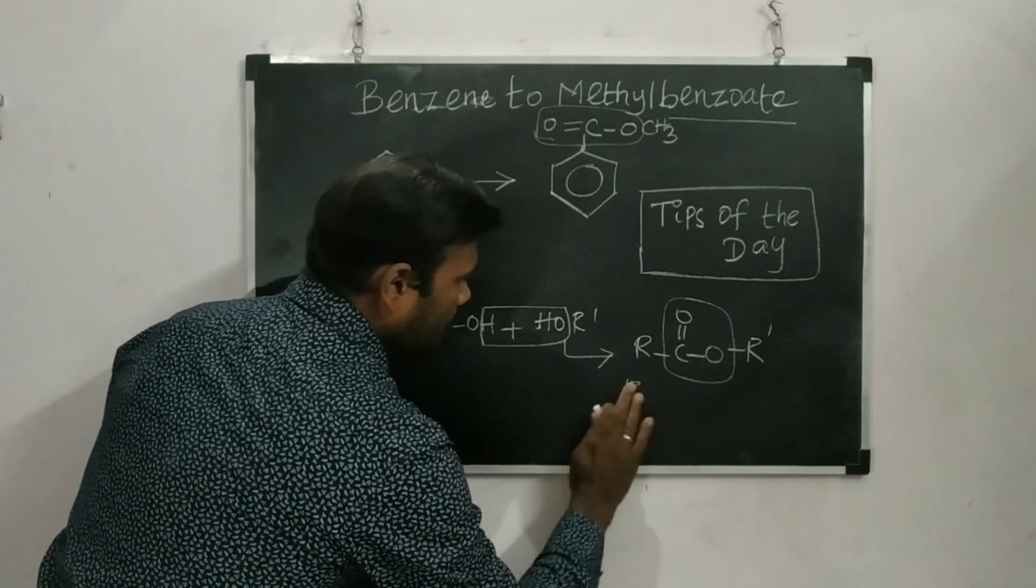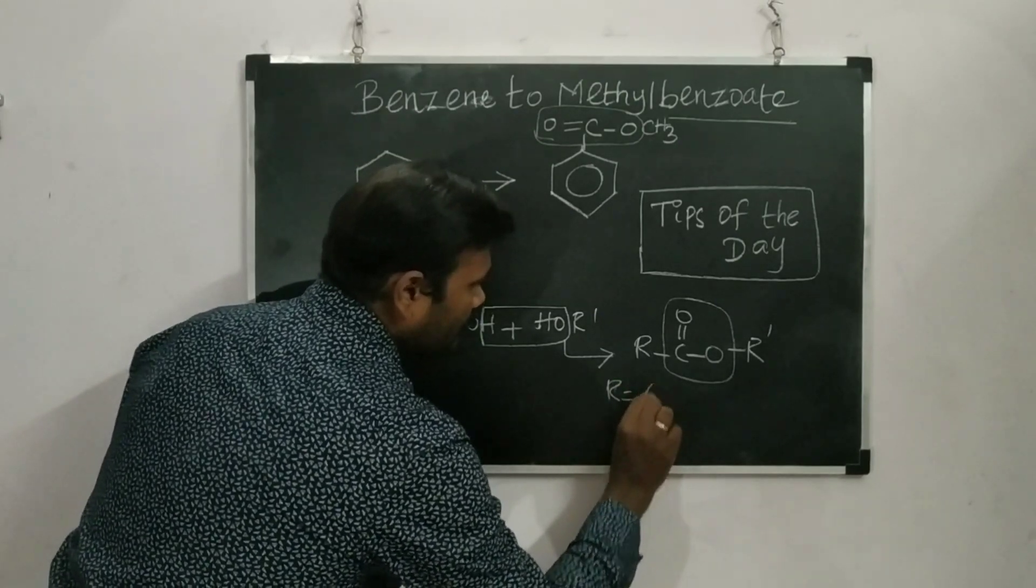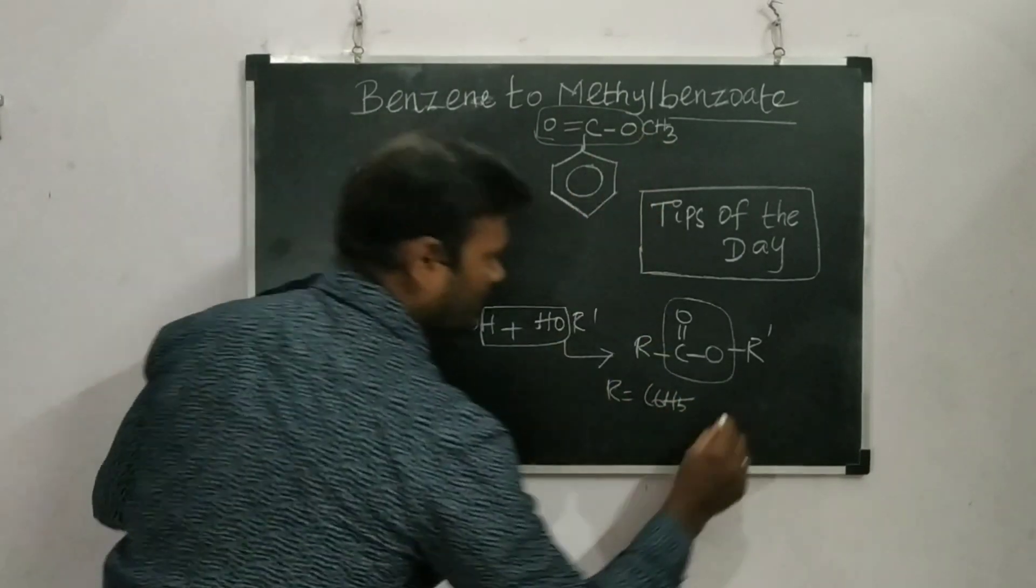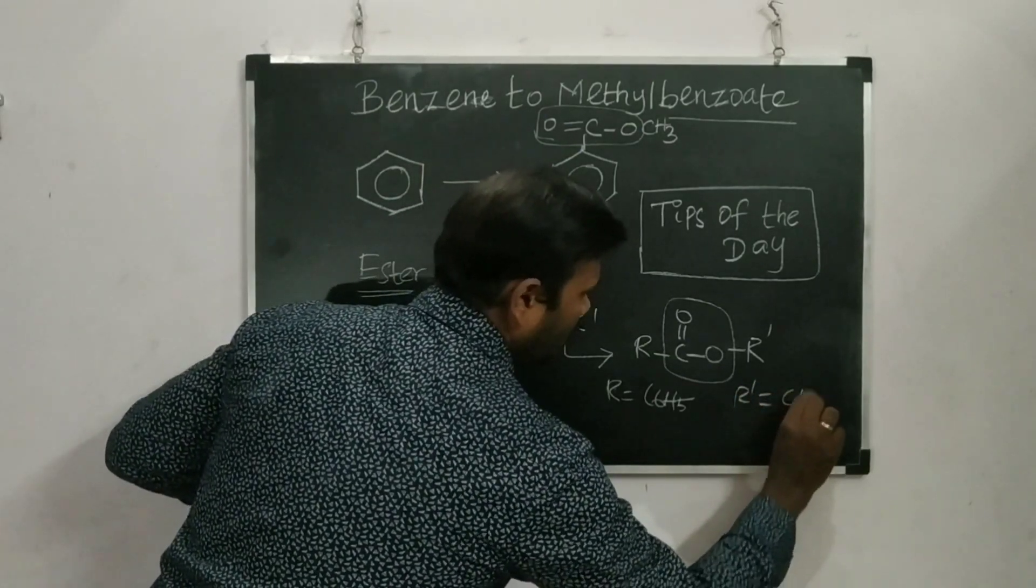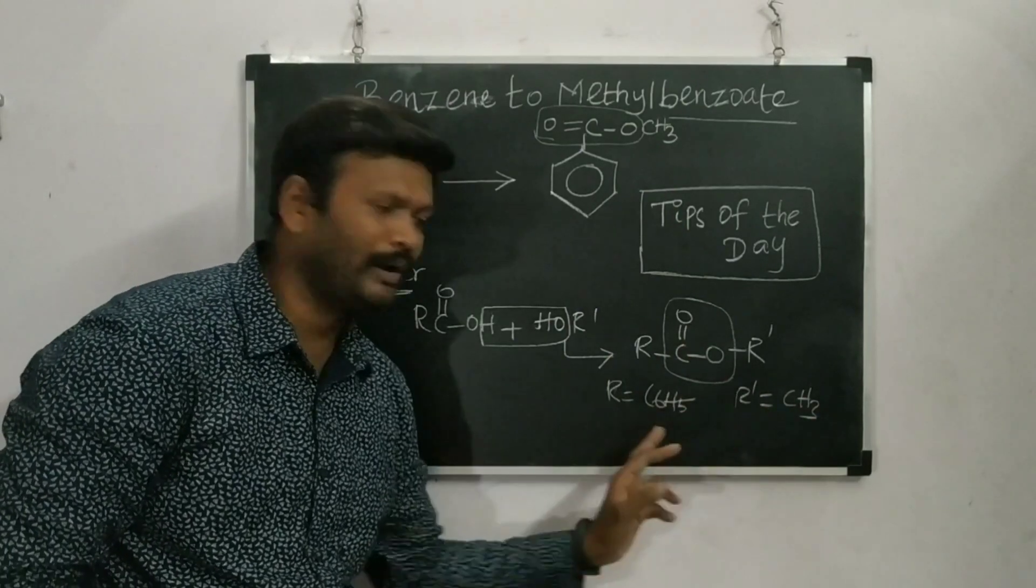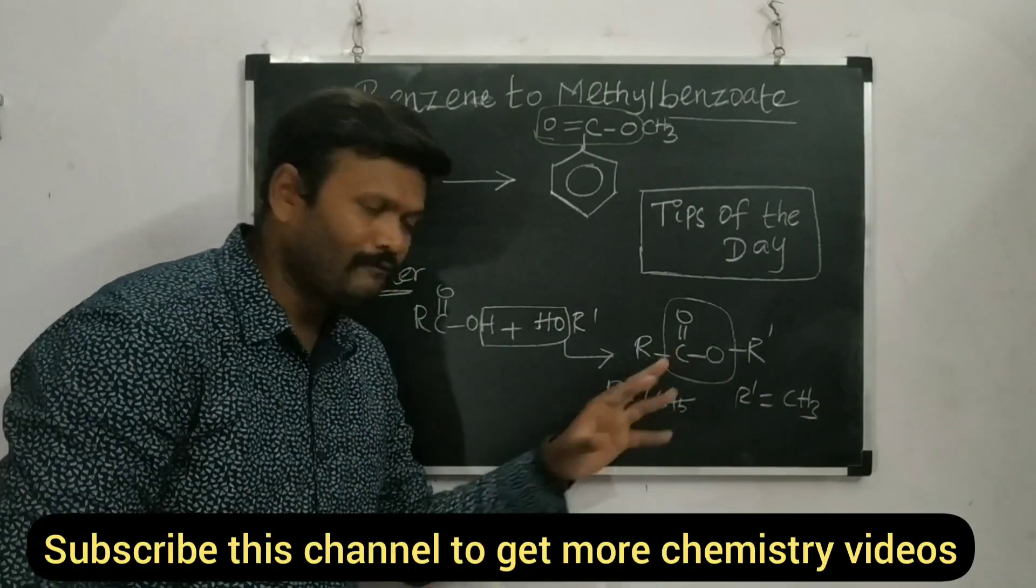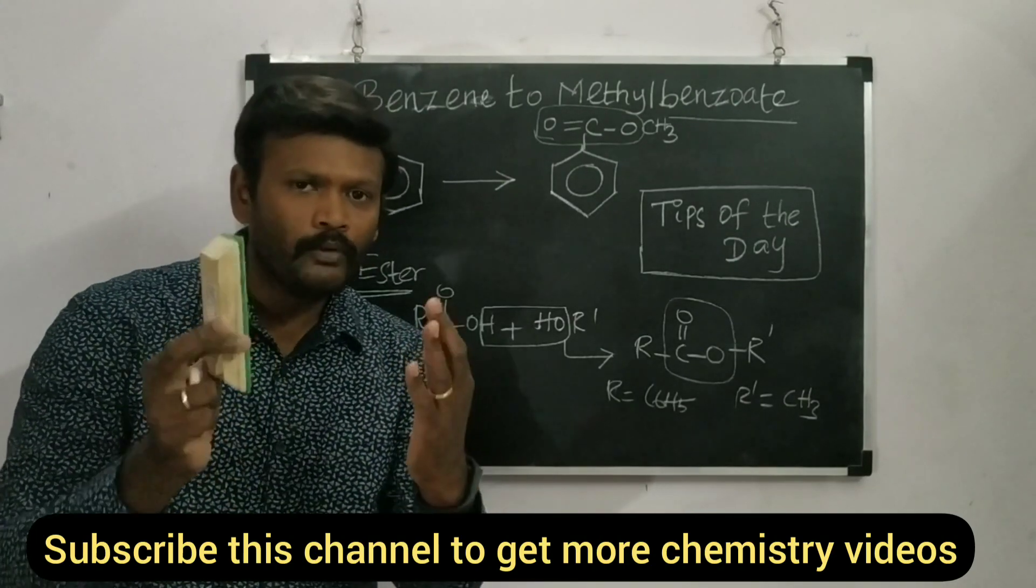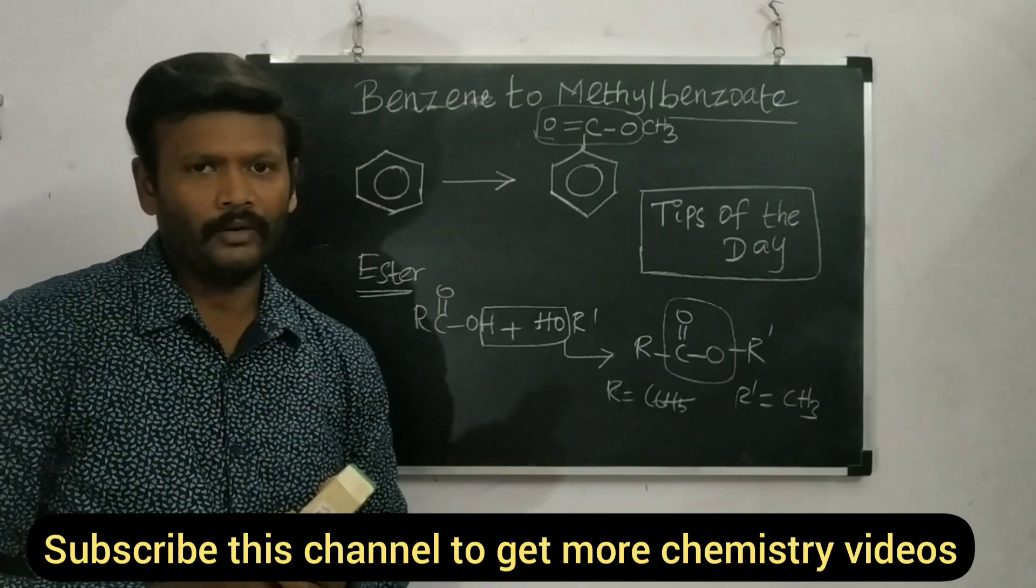Here R would be C6H5, phenyl ring. Here R' is CH3. Just by looking at the product, we can identify the reactants. Once you find out it is an ester that I need to prepare from alcohol and acids.